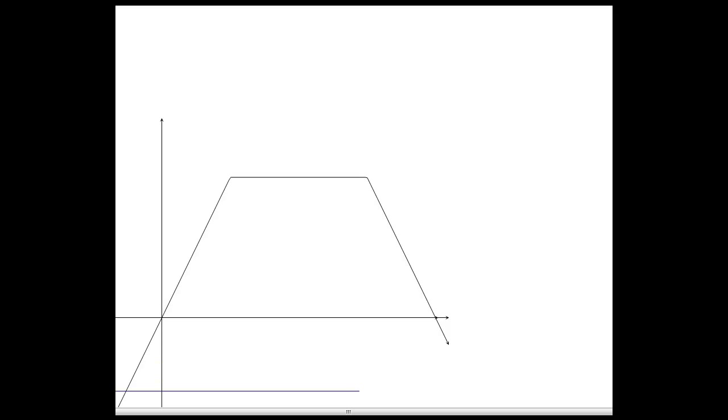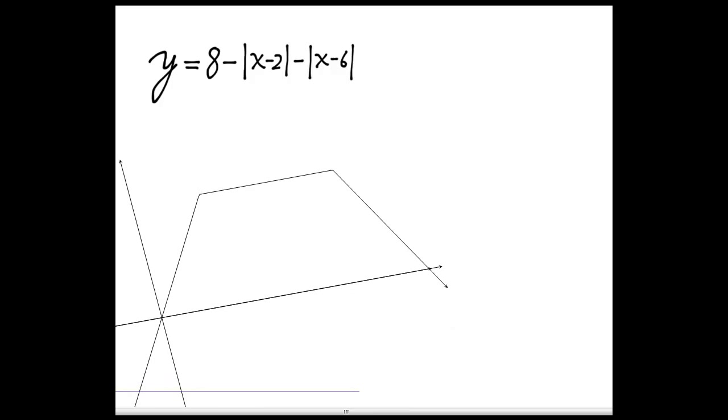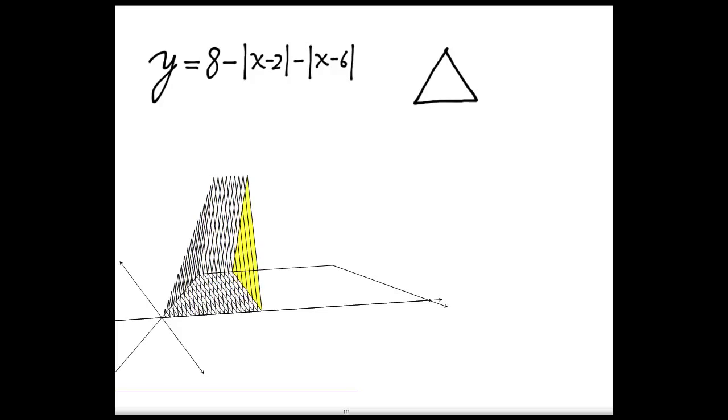In this problem, we have the function y equals 8 minus absolute value of x minus 2 minus absolute value of x minus 6, and this time the cross sections perpendicular to the x-axis are equilateral triangles.